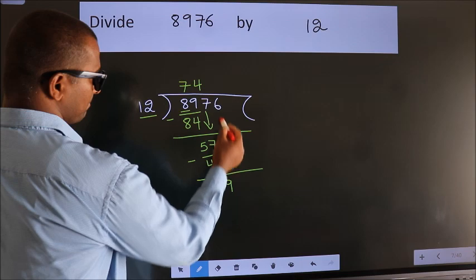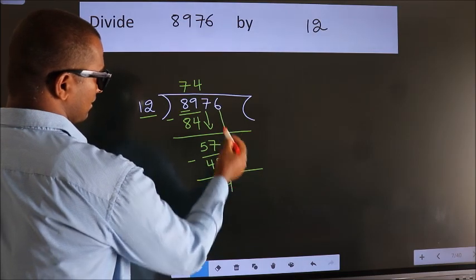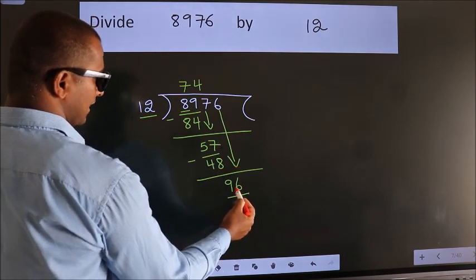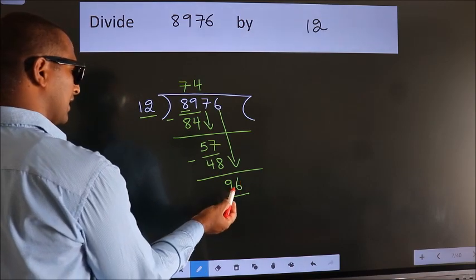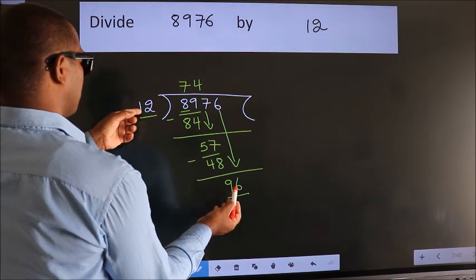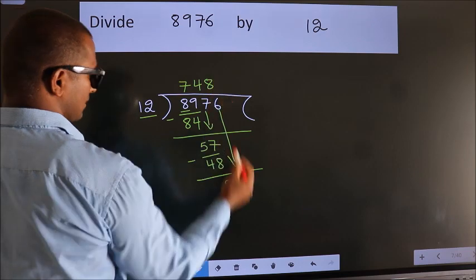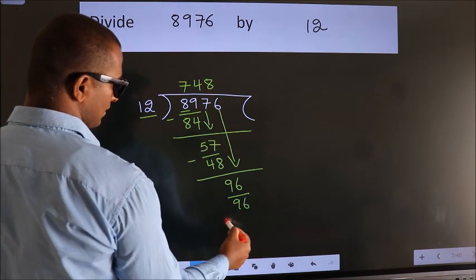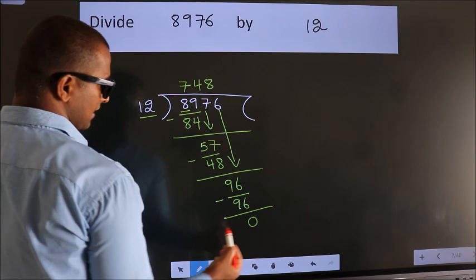After this, bring down the beside number. So, 6 down. So, 96. When do we get 96? In the 12 table, 12 eights, 96. Now, we subtract. We get 0.